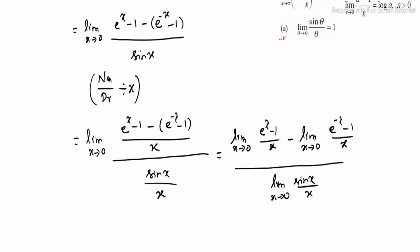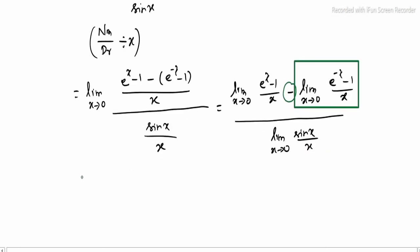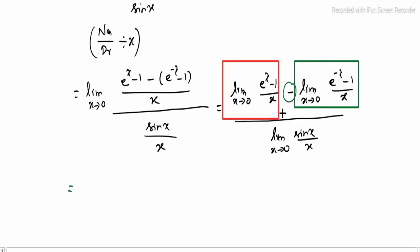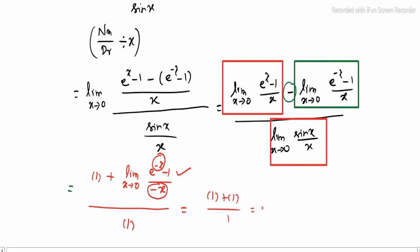Comparing the second identity, we have minus x in the exponent, but the denominator has plus x, so we adjust the sign. Using the standard identity, limit x tends to 0 of e power x minus 1 divided by x equals 1, this value is 1. So we get 1 plus 1 divided by 1, which gives us 2. Thank you.